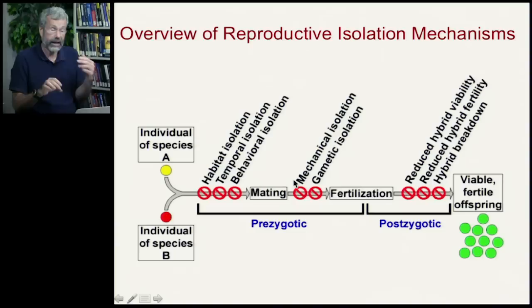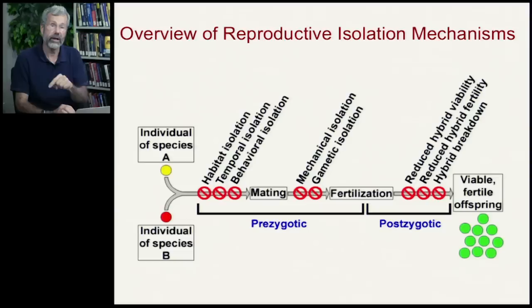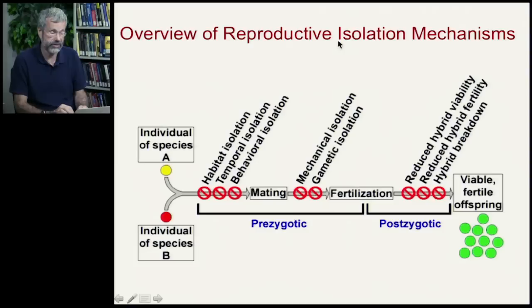There may be times where two different species try to mate but the male reproductive organ can't fit inside the female — that's mechanical isolation. Or the pollen may not be able to form tubes that go all the way in to reach the ovule — that's gametic isolation. All of those prevent fertilization from taking place, so these are all prezygotic reproductive isolation mechanisms.